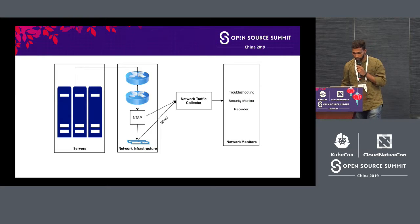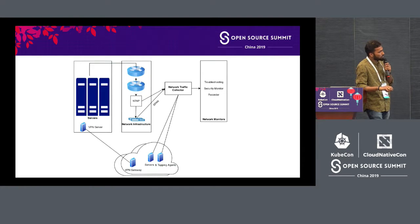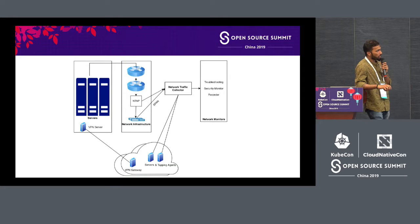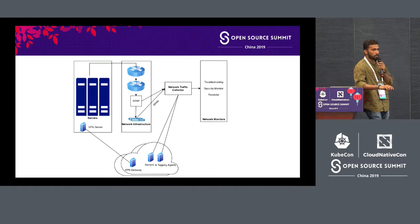If we have hybrid clouds — an on-premise cloud and a public cloud — whatever traffic flows within the on-premise network can be captured and sent to the monitors. But the problem with public cloud is we only have access to the services or VMs, not directly to the servers. So we can't deploy NTPs or SPAN on the switches. Even with a load balancer between the private and public cloud, we can only monitor total traffic going to the public cloud, not each individual VM.